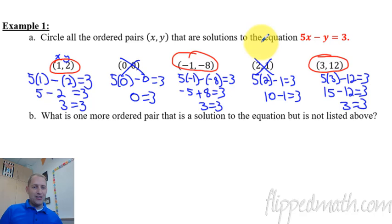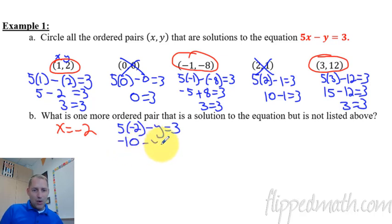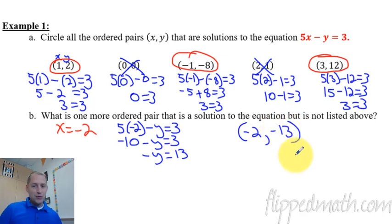All right, so what is one more ordered pair? What could we come up with that we don't have listed here? There's several ways to do this. One way I do is I just pick any number for X. If I just said X equals negative 2, let's just plug it in and see what we get here. So I'm going to say 5 times negative 2 minus Y equals 3. And then this is going to be negative 10 minus Y equals 3. Add the 10 and you get negative Y equals 13. So Y is going to equal negative 13. So our ordered pair would be X equals negative 2 and Y would equal negative 13.